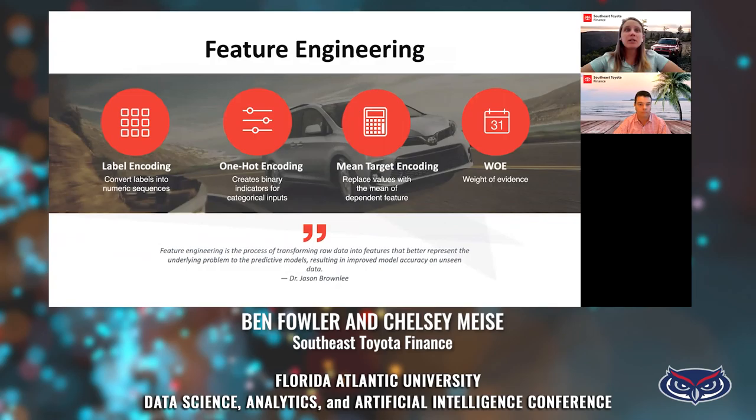After we cleaned the data and took time to understand it through exploratory data analysis, the next step is feature engineering. To borrow a quote from Jason Brownlee: feature engineering is a process of transforming raw data into features that better represent the underlying problem to the predictive models, resulting in improved model accuracy on unseen data.